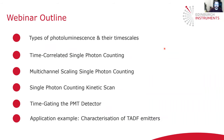A brief outline of my talk. I'm going to start off explaining the different types of photoluminescence and the timescales they occur in. I'm then going to move on to the three photon counting modes in the FLS1000 — TCSPC, MCS, and Kinetic — and explain what types of photoluminescence and what timescales they should be used in. I'll then cover how you can gate the photomultiplier detector and the advantages this has for separating fluorescence from phosphorescence. Finally, I'm going to end with an application example: the characterization of TADF emitters, which involves a combination of all these previous techniques put into practice.